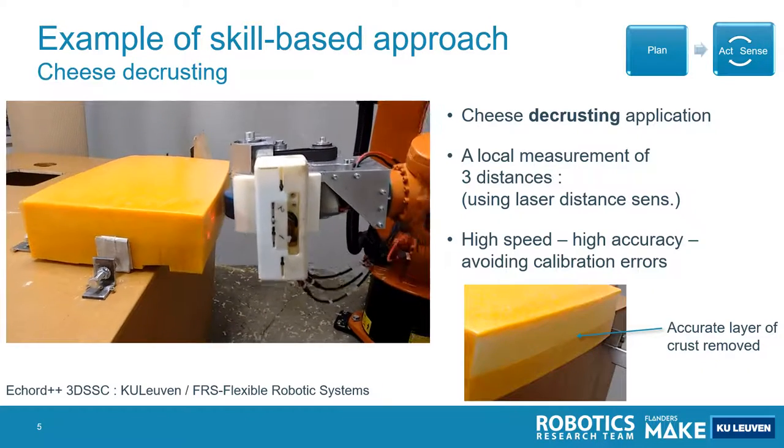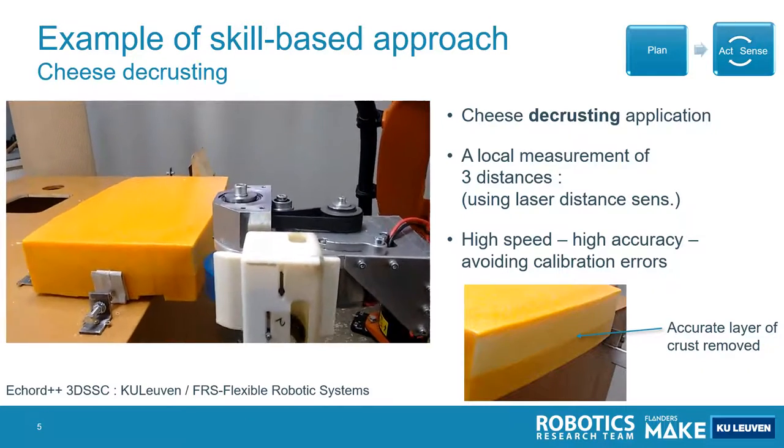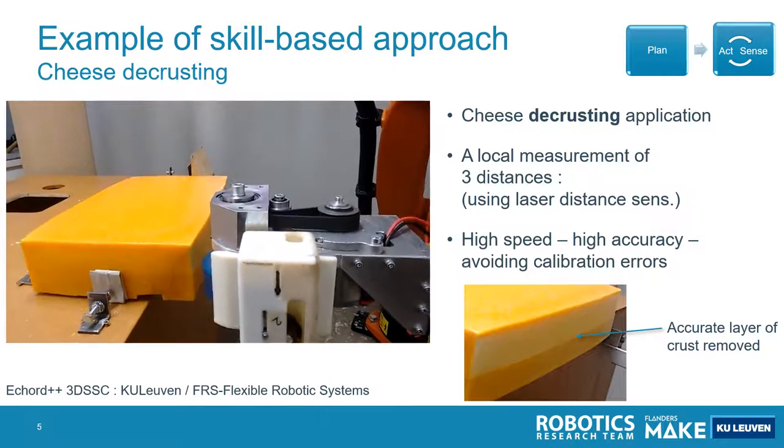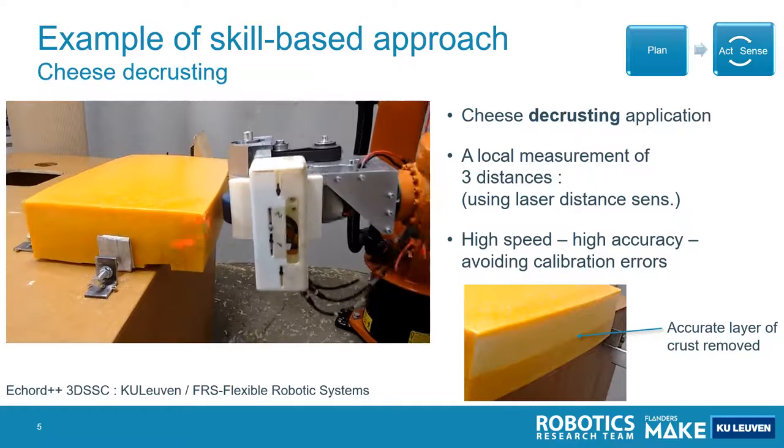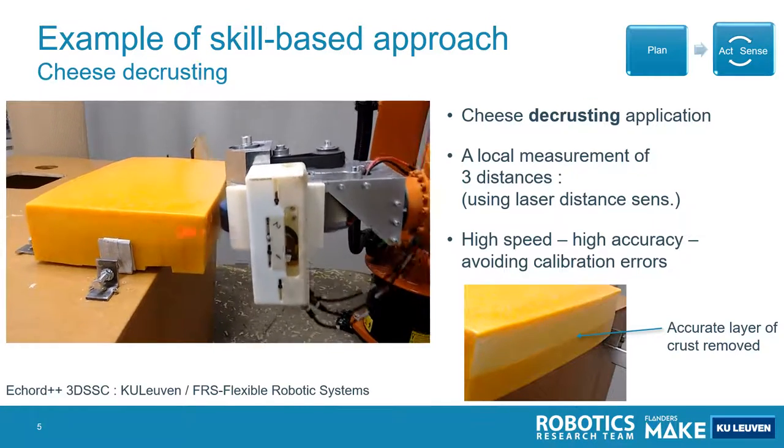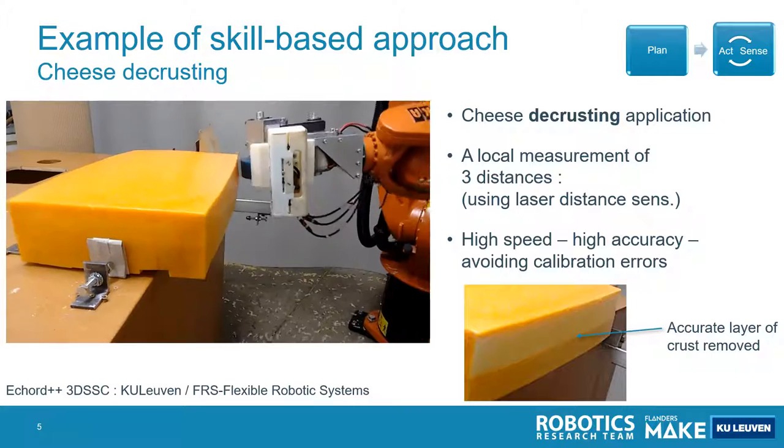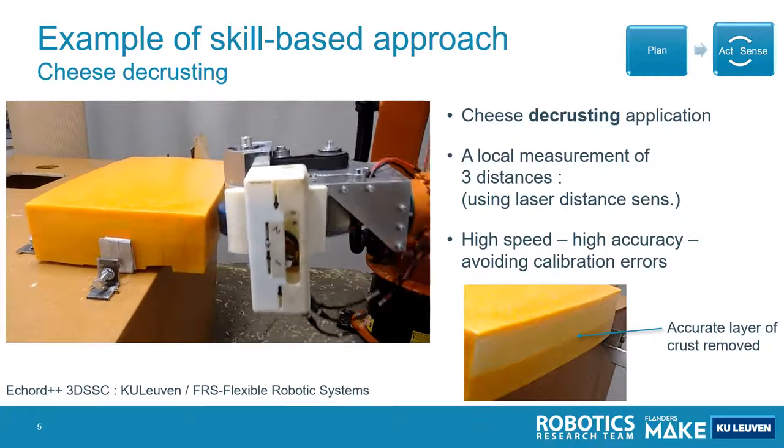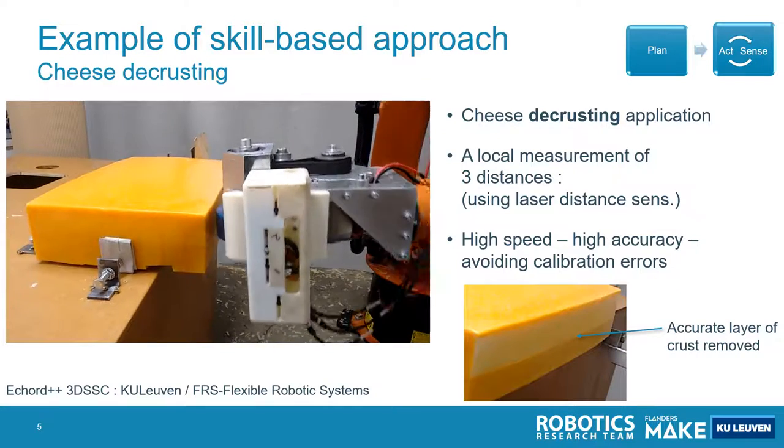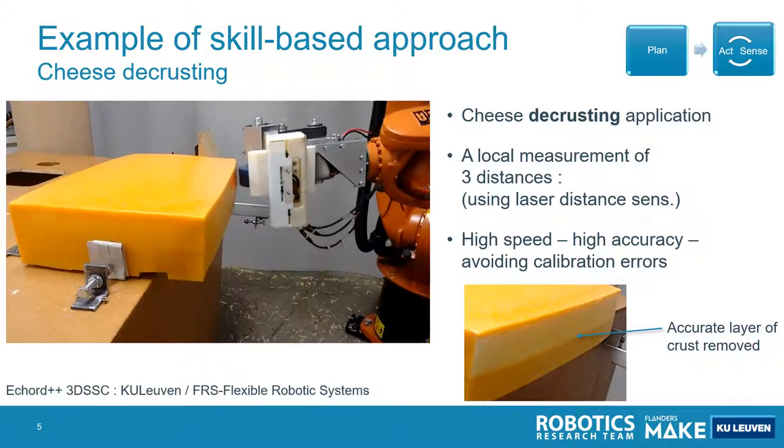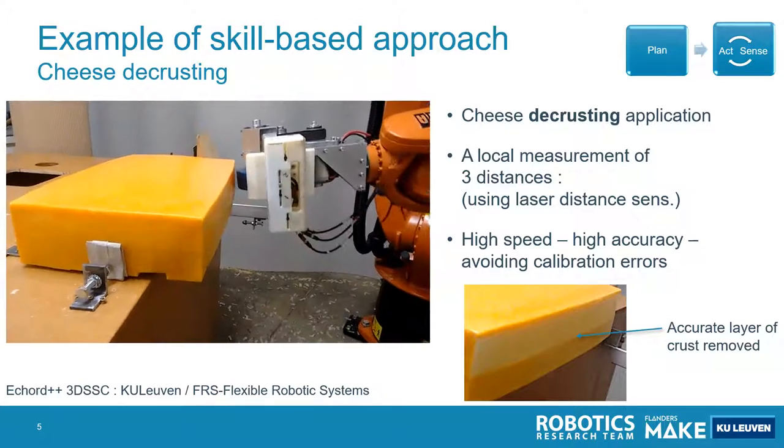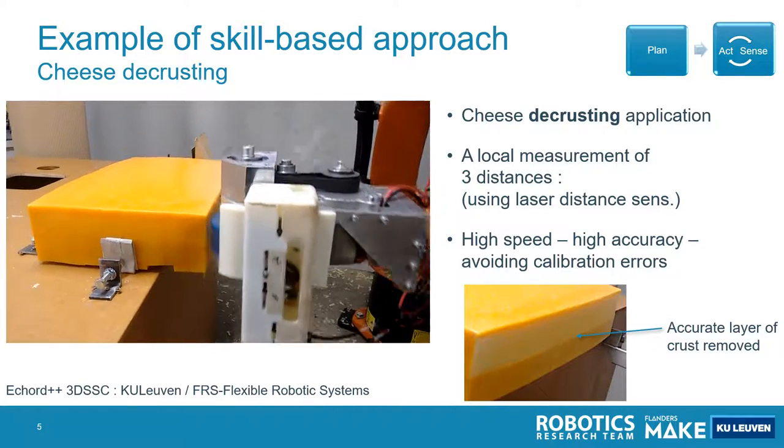At the same time we want to remove this crust very accurately. Because if you for example cut one millimeter too much cheese, this already corresponds to 3% of the cheese that has been removed. If you see the economic impact, that's 3% of the turnover of that cheese production company. That's a lot of money. So we want to accurately remove the crust of this cheese.